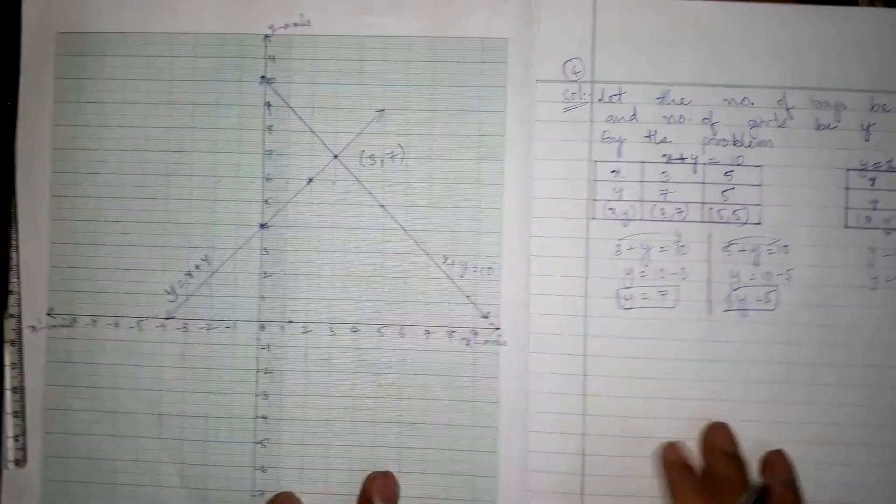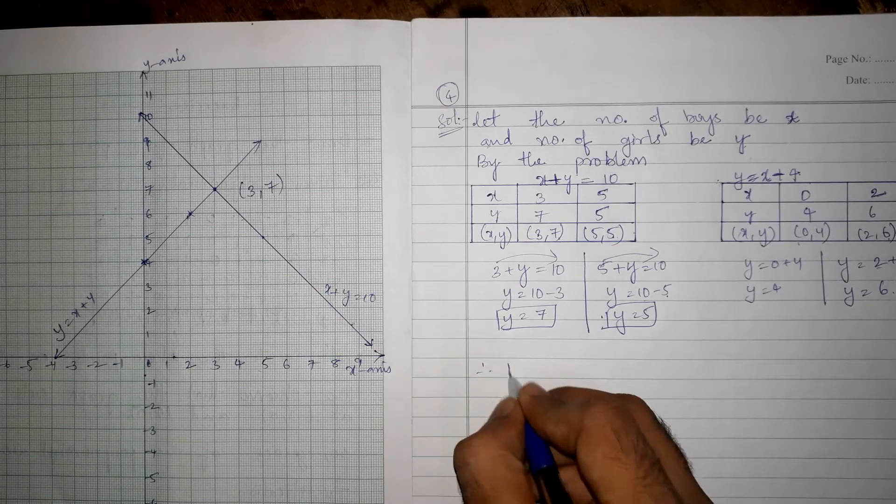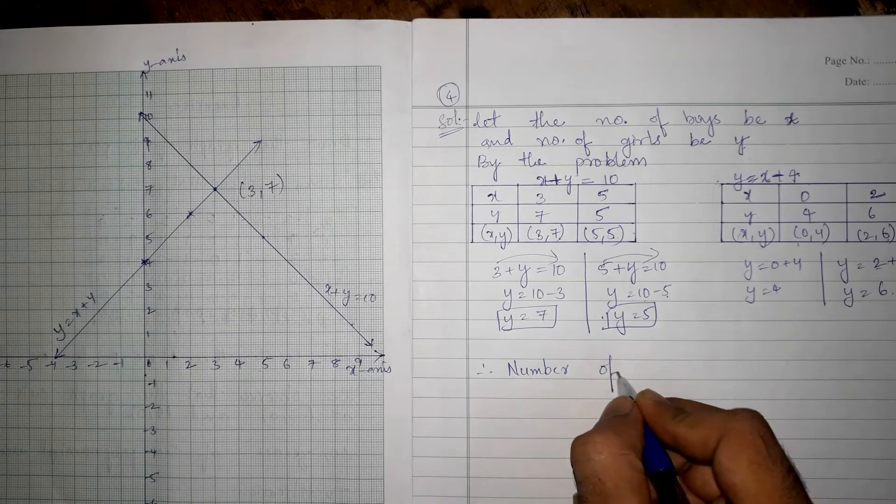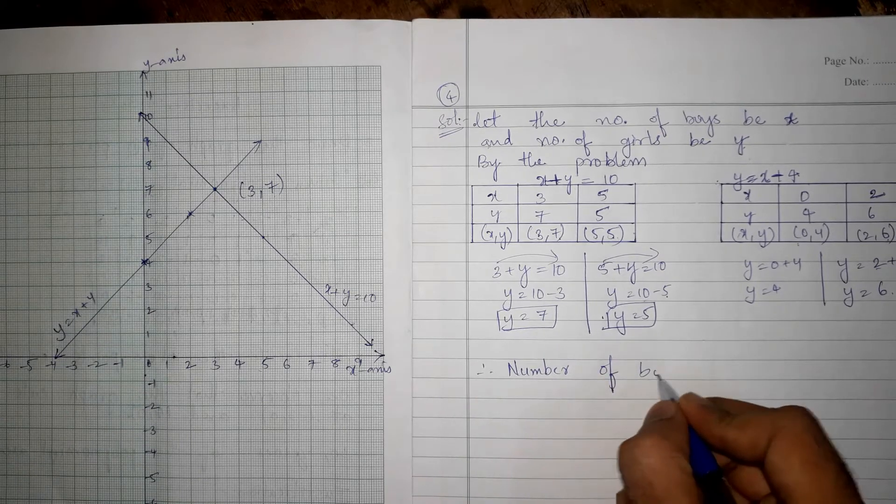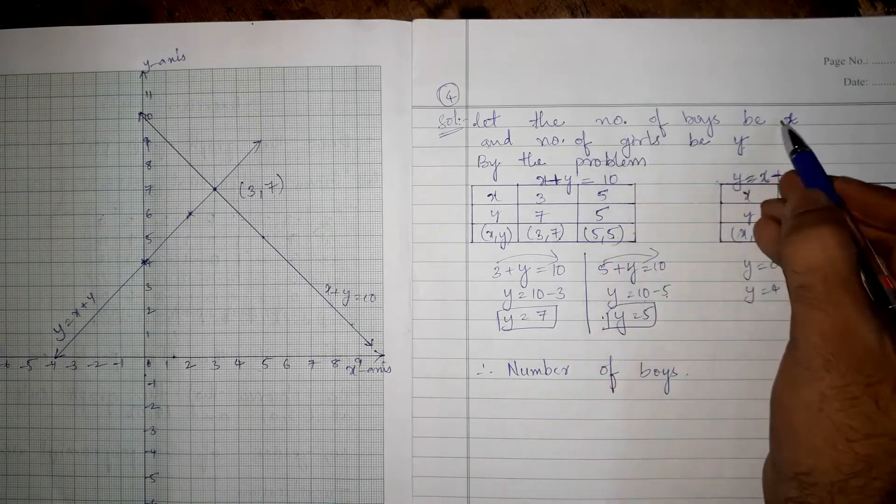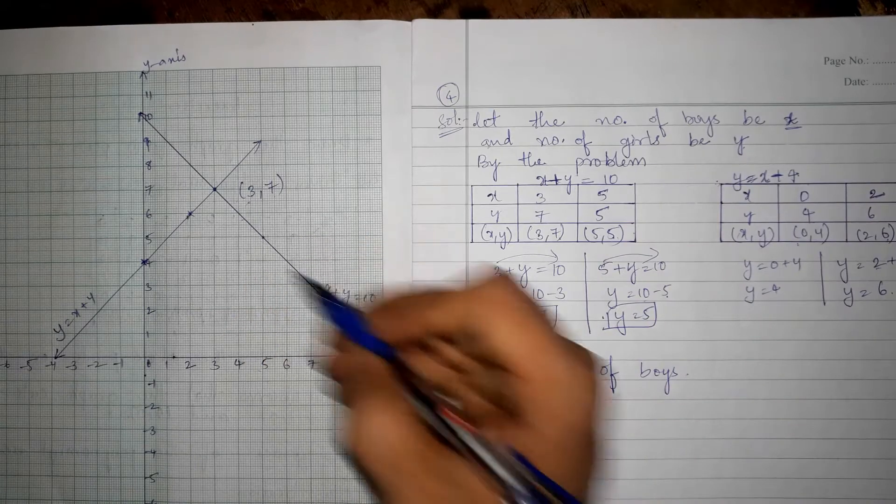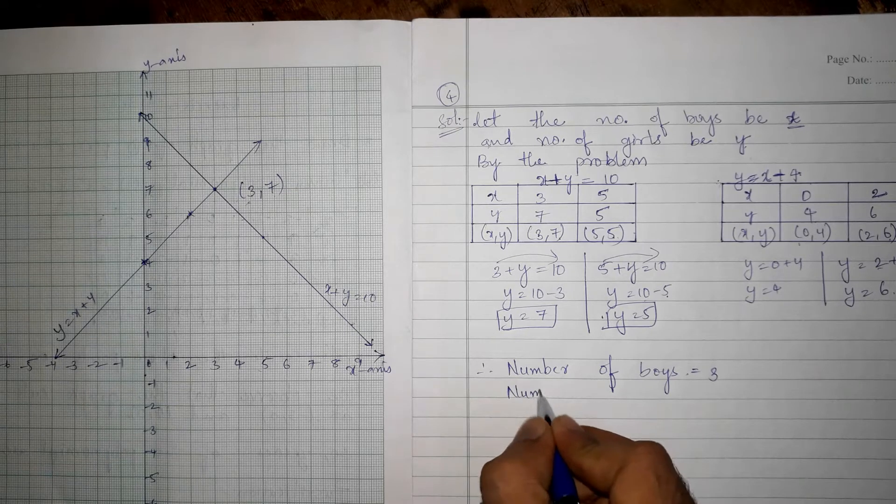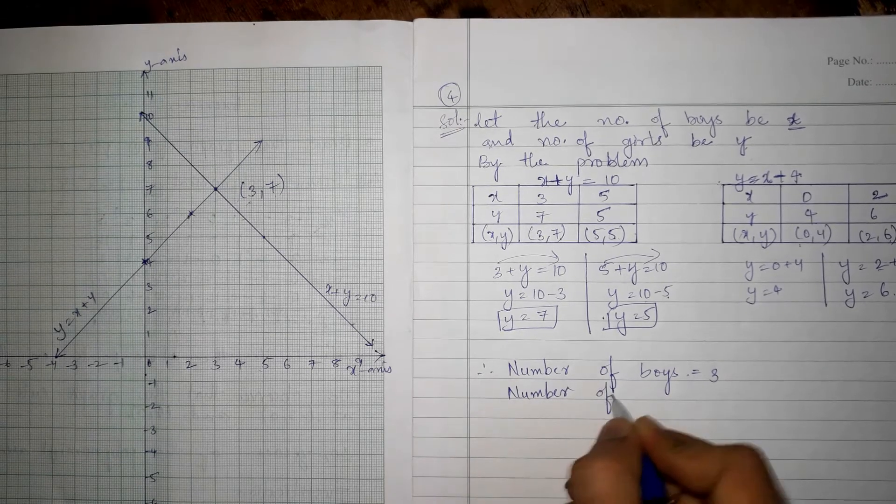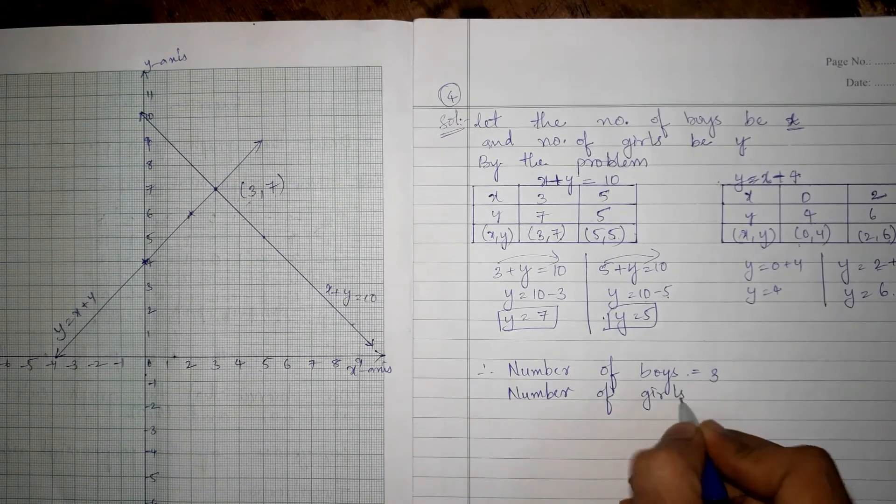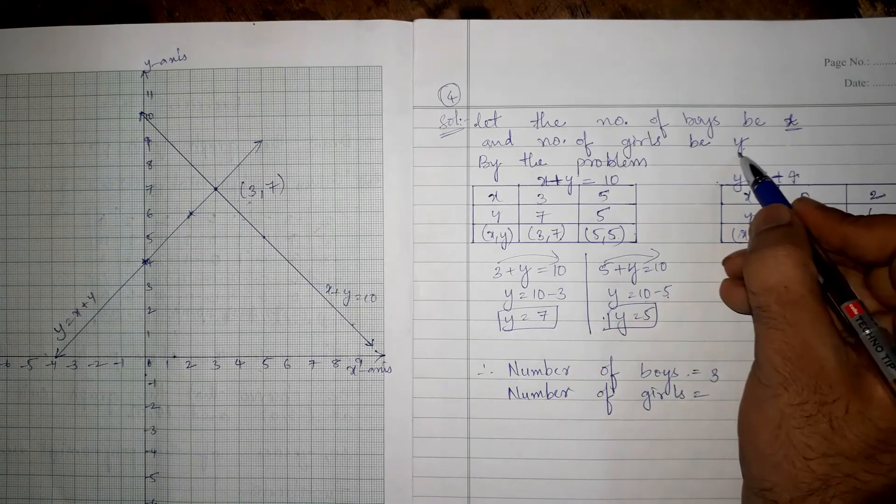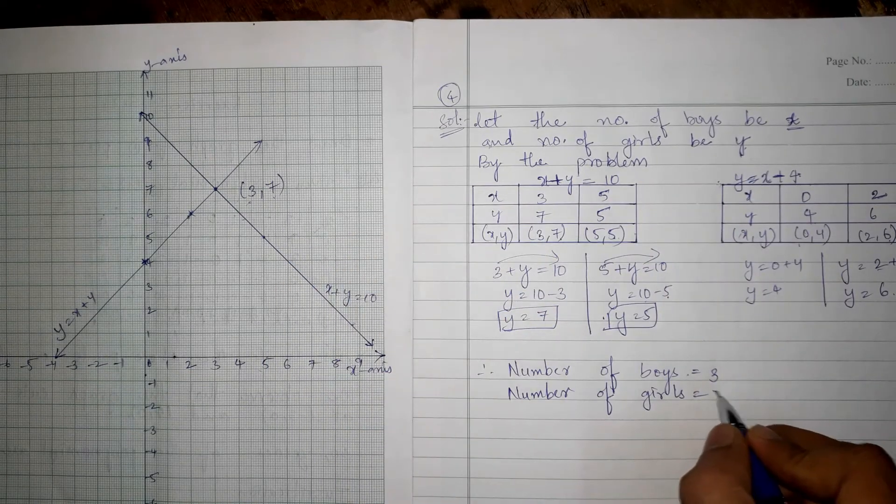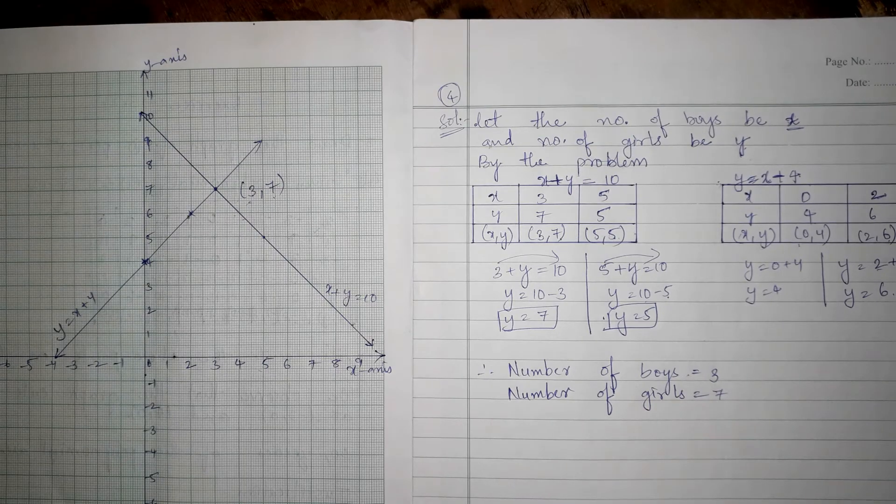So therefore we can write: Therefore, number of boys - boys are nothing but x. x value is 3, so number of boys equals 3. And number of girls - girls is y, so y is 7, so number of girls is 7.